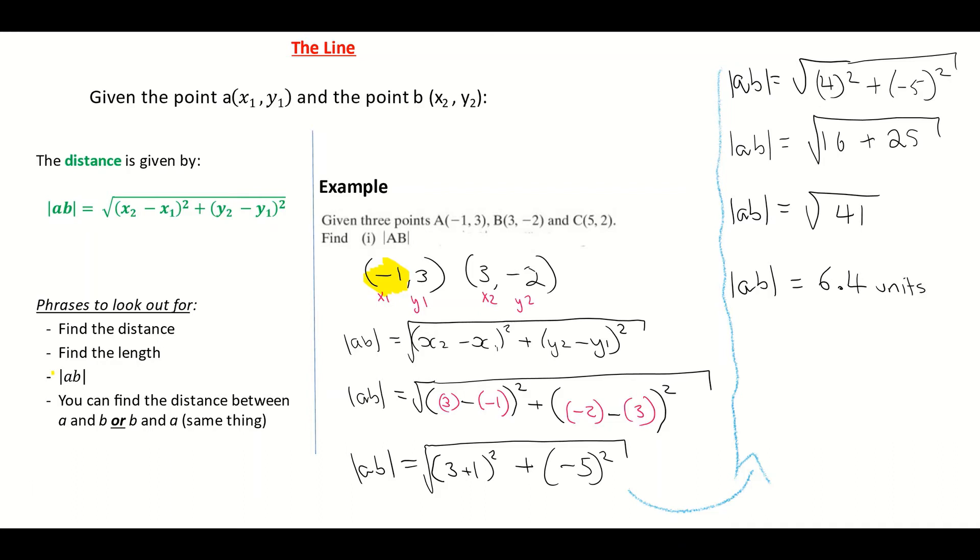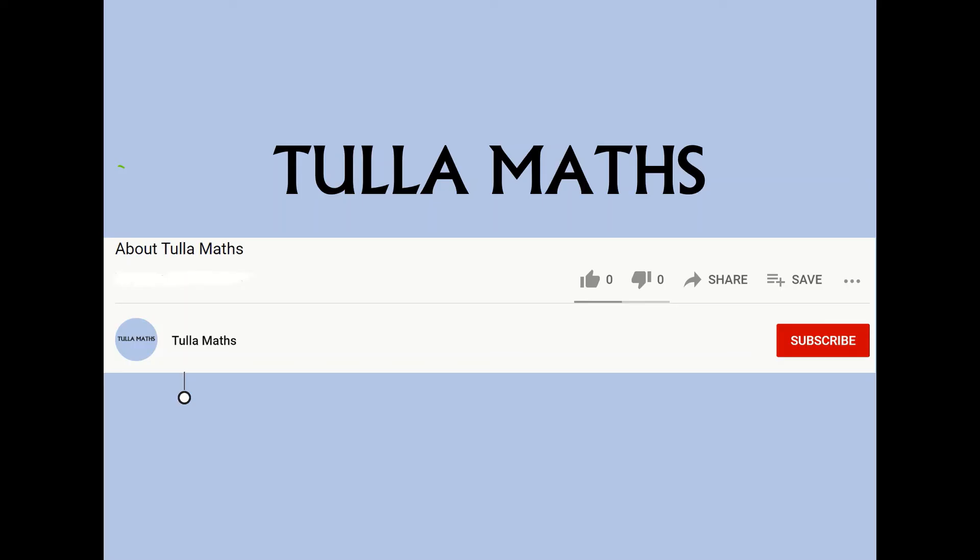Again, I don't know if it's centimeters or meters or kilometers. So that's why I'm writing it as units. So my answer, AB, is equal to 6.4 units. Hope it helps. Thank you for watching another tutorial video from Tullamaths. Make sure and subscribe.